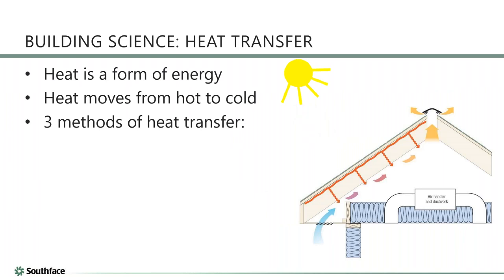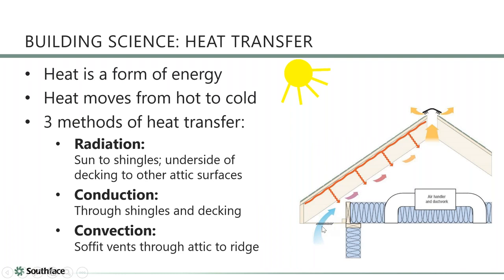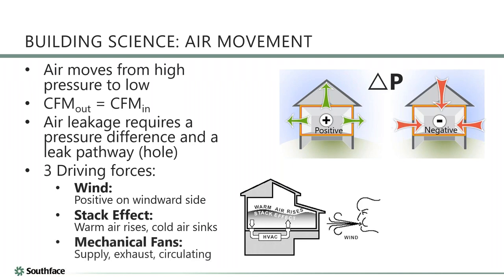Quick recap on the series so far: heat transfer — heat goes from hot to cold via radiation (like the sun to shingles), conduction (through solid materials), or convection (like warm air rising through a soffit and ridge vent). Air movement — air moves from high pressure to low pressure; the amount that leaks out equals the amount that leaks in. The three driving forces are wind, stack effect, and mechanical fans.